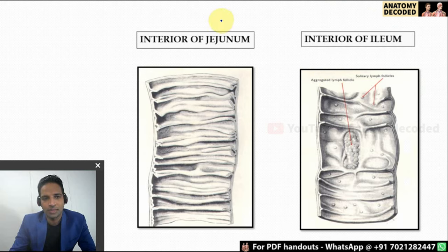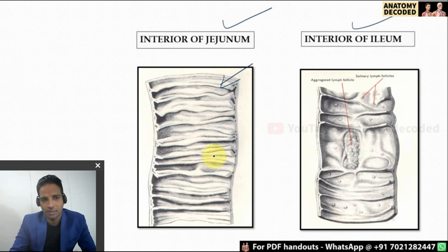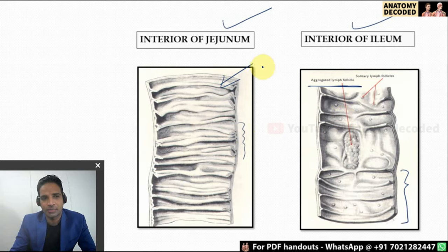This image shows the difference between the interior of jejunum and ileum. In jejunum we can see mucosal folds referred to as valves of Kerckring, also called plicae circulares — in radiology referred to as valvulae conniventes. In jejunum, multiple small folds are placed close to each other, whereas in ileum they are placed wide apart. Ileum also has aggregated lymphoid follicles called Peyer's patches, which may be seen in the ileum.